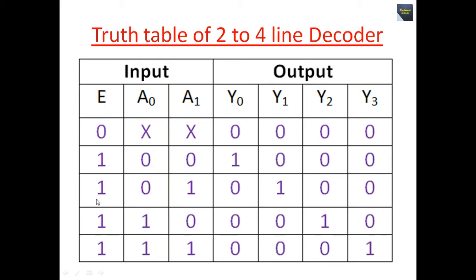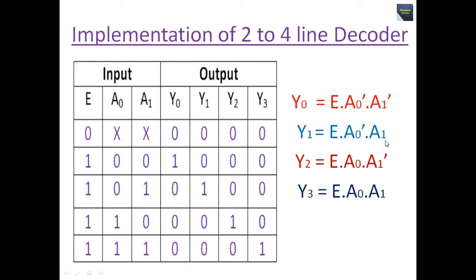From the truth table we derive the Boolean expressions. When Y0 is 1, the minterm is E · A0 complement · A1 complement. For Y1: E · A0 complement · A1. For Y2: E · A0 · A1 complement. For Y3: E · A0 · A1. From this truth table we can easily build the Boolean functions — they are all minterms.